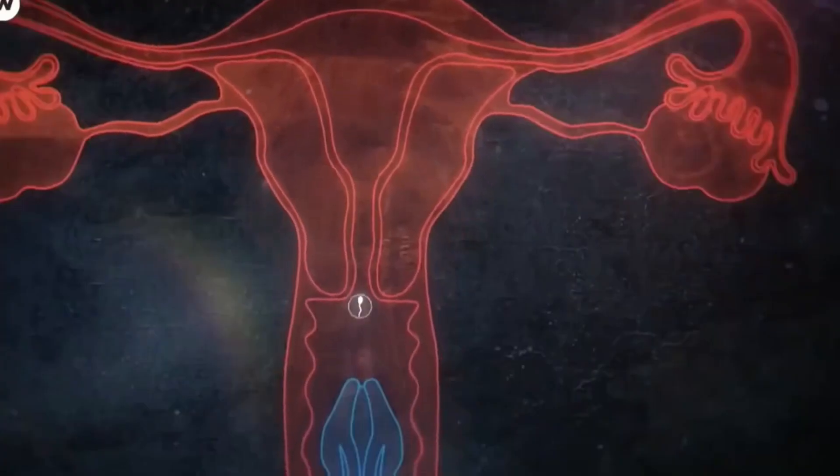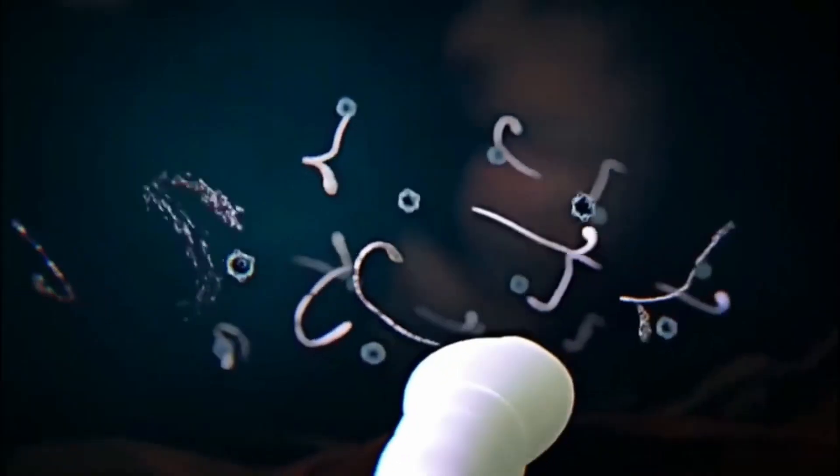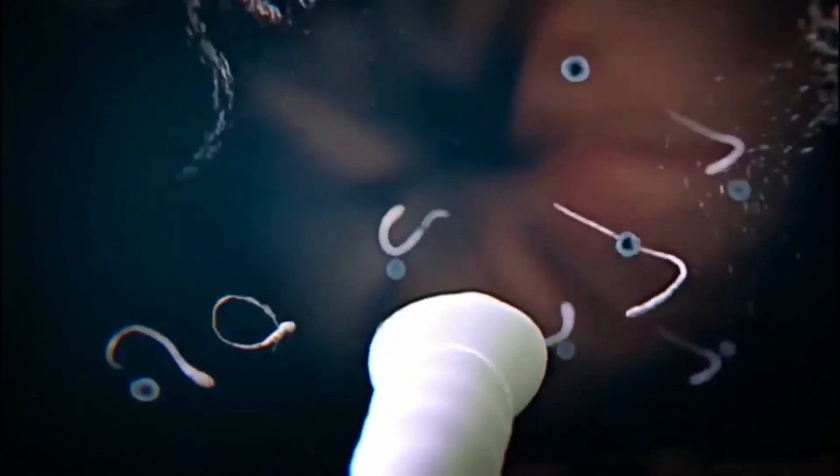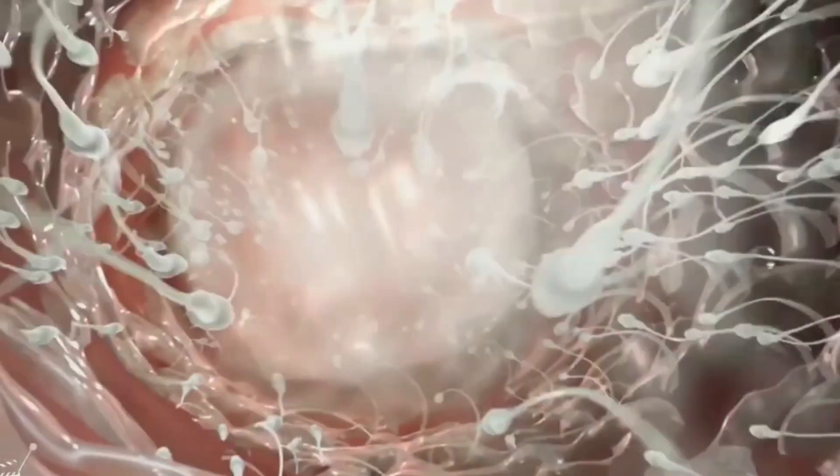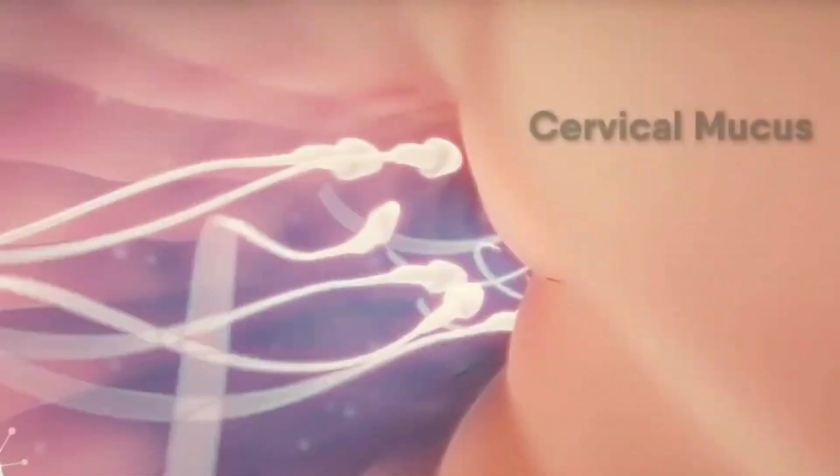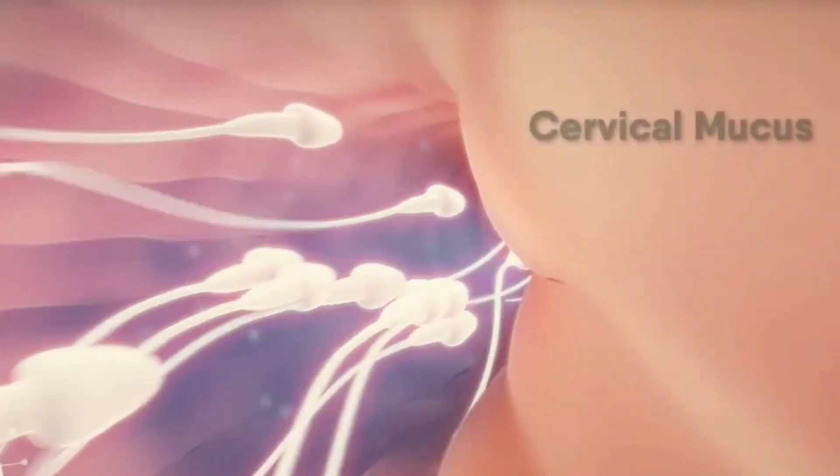The journey starts with sexual intercourse. About 150 million sperm enter the vagina. Soon afterward, millions will either flow out or die in its acidic environment. However, many survive because of the protective elements provided by the fluid surrounding them.